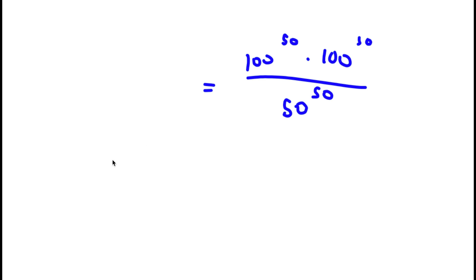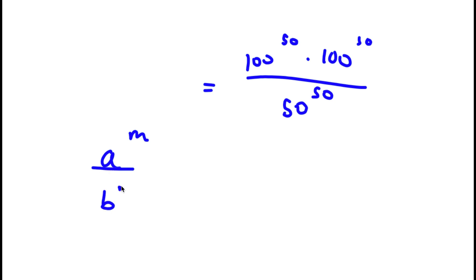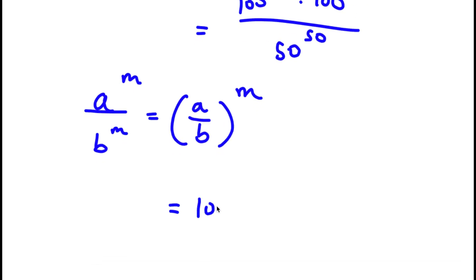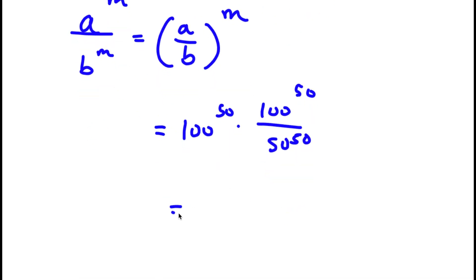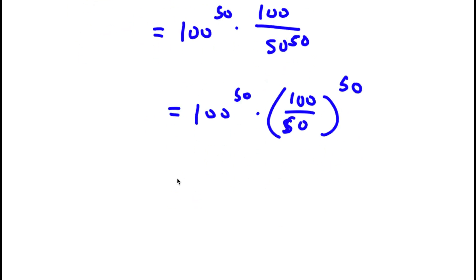Using the property that a to the power of m over b to the power of m equals a over b to the power of m, I can rewrite 100 to the power of 50 over 50 to the power of 50 as 100 over 50 to the power of 50. So now I have 100 to the power of 50 times 100 over 50 to the power of 50, and since 100 divided by 50 is simply 2, I have 100 to the power of 50 times 2 to the power of 50.